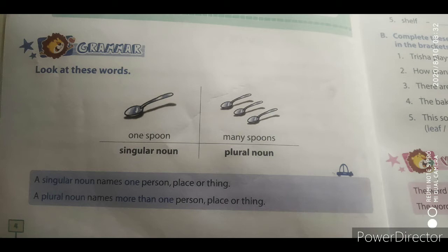So, singular noun's definition is: a singular noun names one person, place or thing. एक singular noun वह होती है जिसमें कोई person भी एक ही होता है, कोई स्थान और कोई वस्तु भी एक ही होती है. और plural noun में इसके opposite होता है. Definition: a plural noun names more than one person, place or thing.